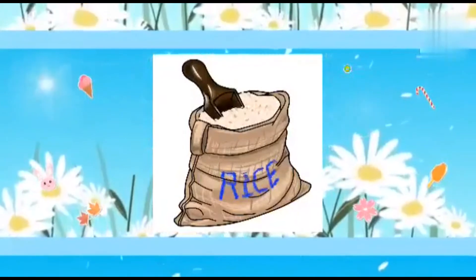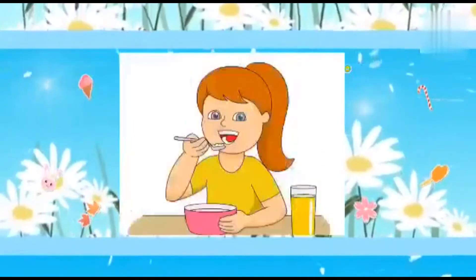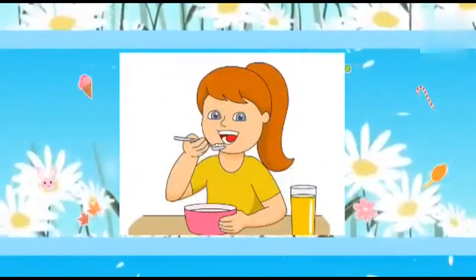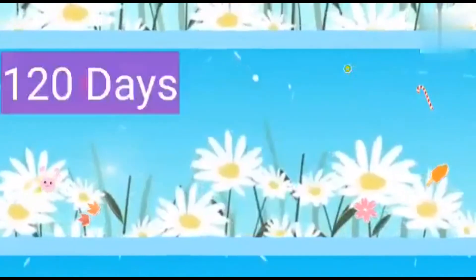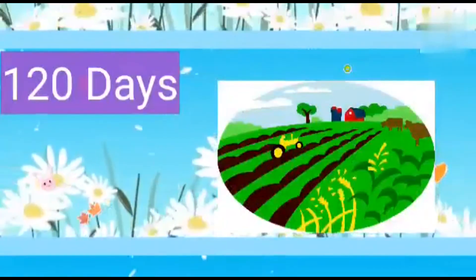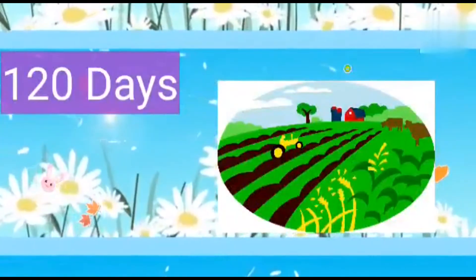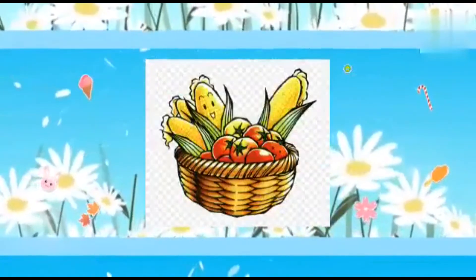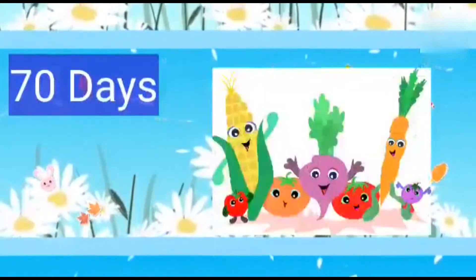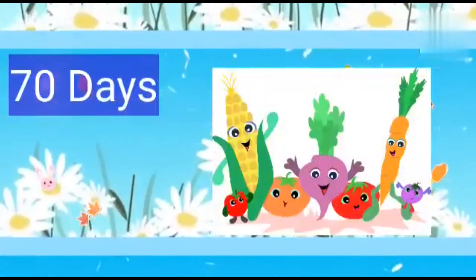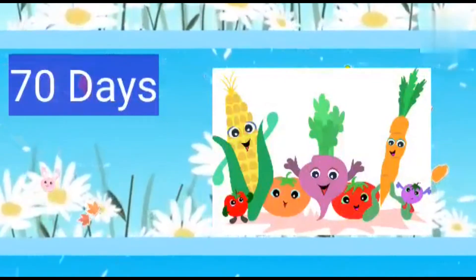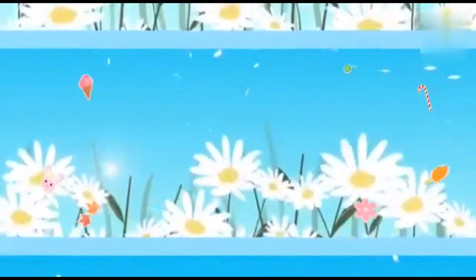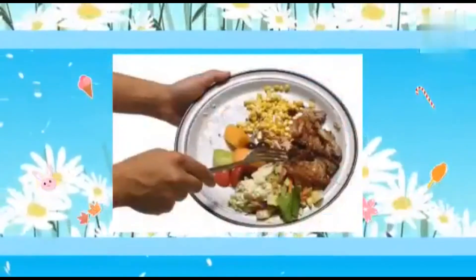Do you know how long it takes rice to grow? क्या आप जानते हैं कि जो rice हम खाते हैं वो grow होने में कितना time लेता है? 120 days. And vegetables take around 70 days to grow. Vegetables को लगभग 70 days लगते हैं grow होने में.